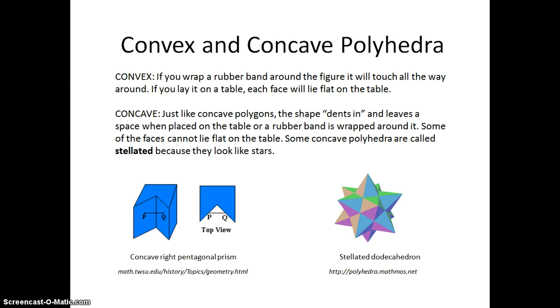For a concave polyhedra, this is a shape that dents in, and if we lay it on the table or wrap a rubber band around it, it's going to have a space. In fact, if we lay it on the table, not all of its faces will be able to kiss the table.